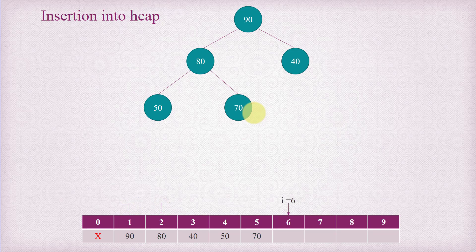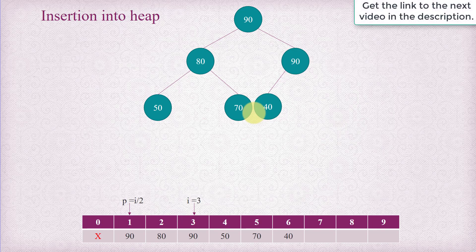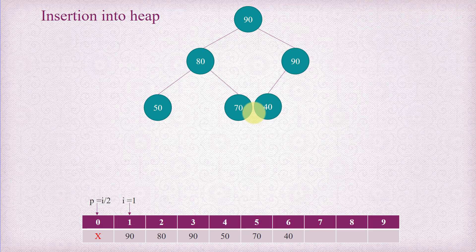The next element is inserted at index 6 — this time it's 95, which will end up at the root since it's the largest element. 95 is greater than 40, so 40 goes to index 6 and we compare 95 with 90. 90 should go to index 3 and we need to place 95 at the root. In the array: p is at 3, we compare 95 with 40, and 40 goes to index 6. Then i goes to 3, p goes to 1, and since 95 is greater than 90, we move 90 to index 3, i goes to 1, p goes to 0 — invalid — so we place 95 at index 1.